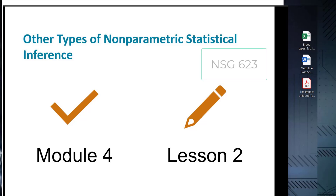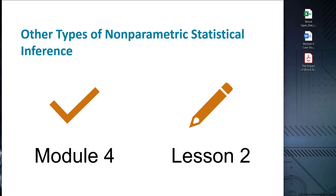In this lesson, we will explore a range of statistical methods beyond the widely known chi-square test. We will learn about various non-parametric tests that serve as powerful alternatives for when we lack interval ratio data, or in situations where certain assumptions about data distributions cannot be met.